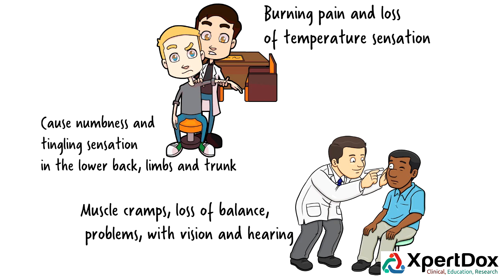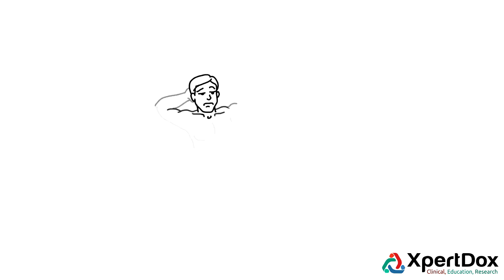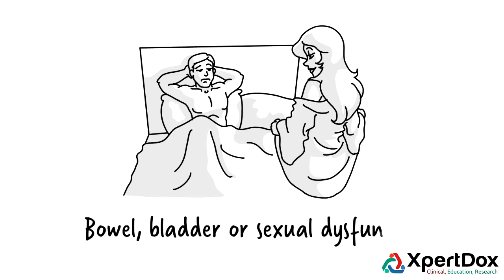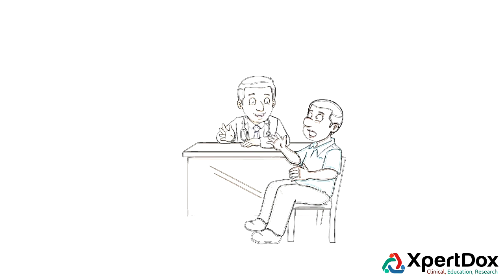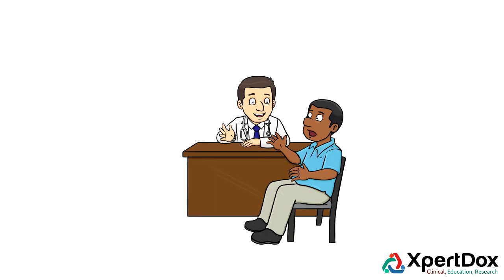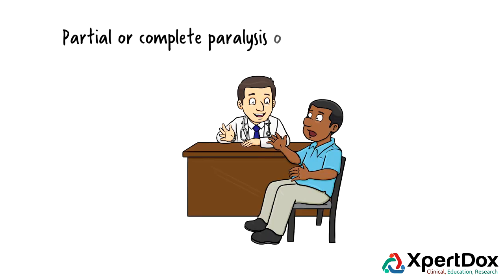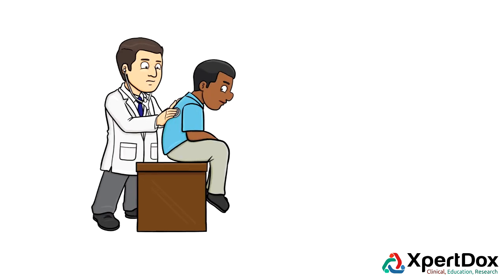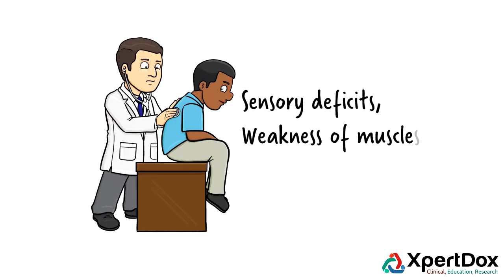Some people develop bowel, bladder, or sexual dysfunction. In severe cases, arachnoiditis can cause partial or complete paralysis of the leg. A detailed neurological exam is required to make the diagnosis, and physical examination can reveal sensory deficits, weakness of muscles, and abnormalities of reflexes.